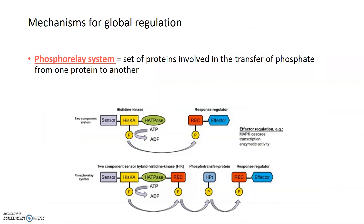In addition to two-component systems, there are mechanisms of global regulation that have extra steps in the middle. Rather than passing a phosphate group directly from a kinase to a response regulator, some regulation systems include additional intermediate proteins that can pass the phosphate group from the kinase to another intermediate, and then ultimately to the response regulator. This passing or transfer of phosphate groups from one protein to another is known as a phosphorelay system.